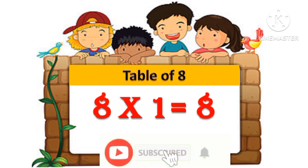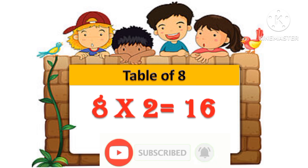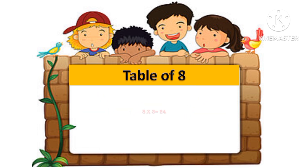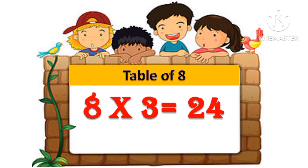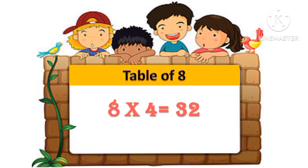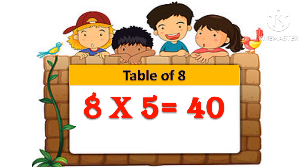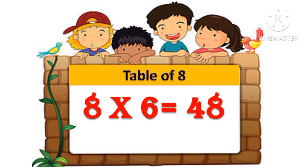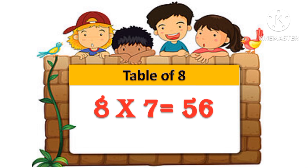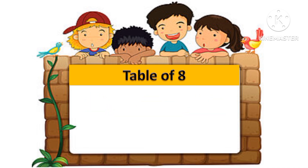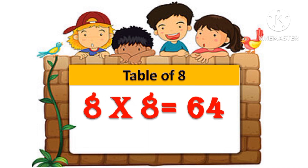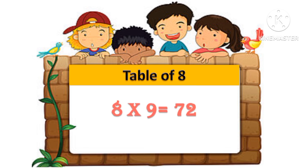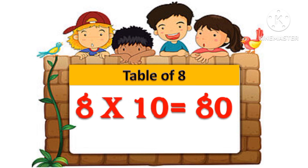8 one's are 8, 8 two's are 16, 8 three's are 24, 8 four's are 32, 8 five's are 40, 8 six's are 48, 8 seven's are 56, 8 eight's are 64, 8 nine's are 72, 8 ten's are 80.